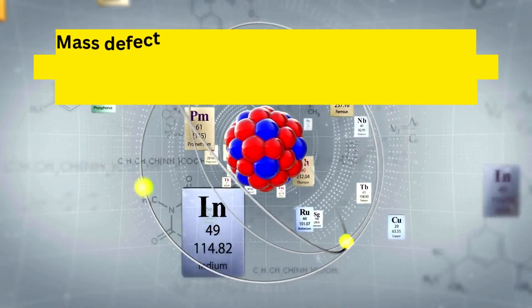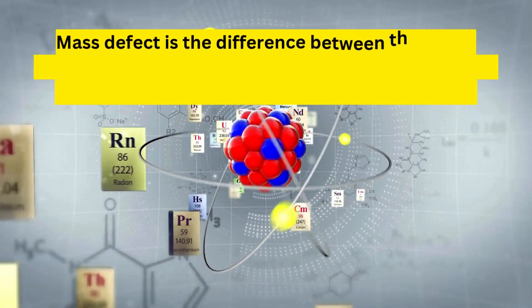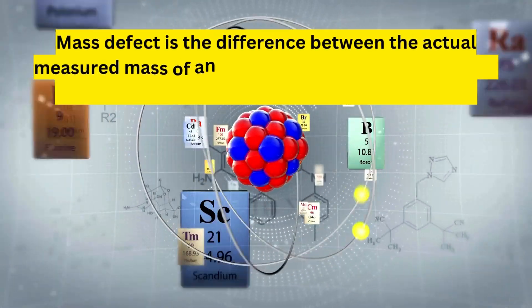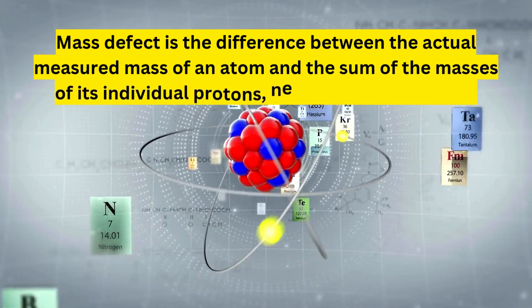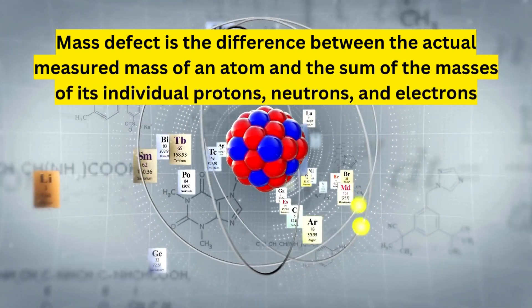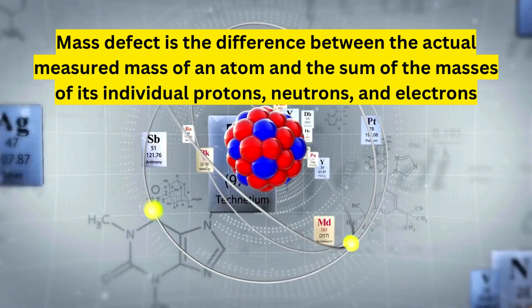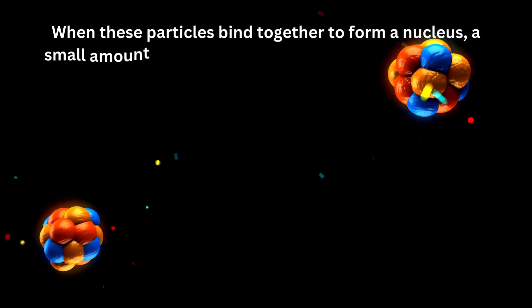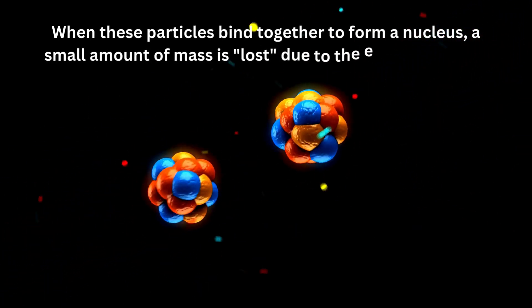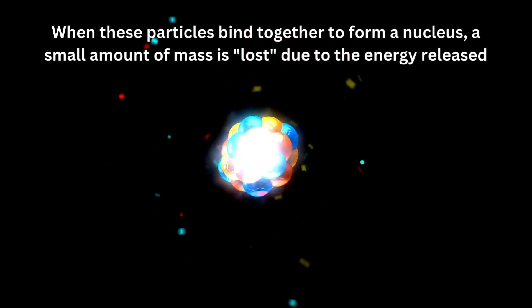Mass defect is the difference between the actual measured mass of an atom and the sum of the masses of its individual protons, neutrons, and electrons, meaning that when these particles bind together to form a nucleus, a small amount of mass is lost due to the energy released in the process. This lost mass is the mass defect. And it is a key concept in nuclear physics, indicating the stability of an atom's nucleus.